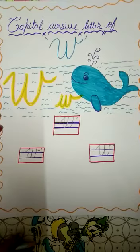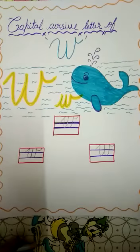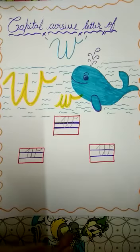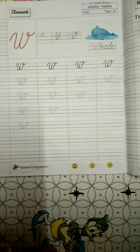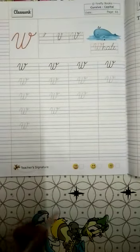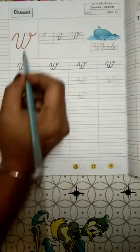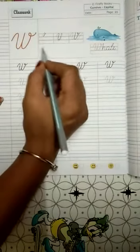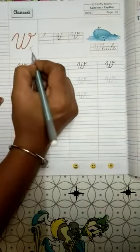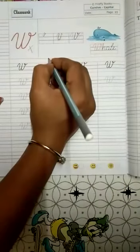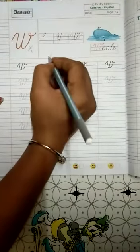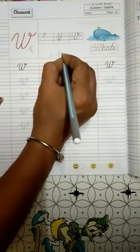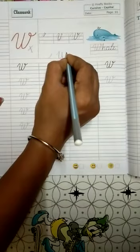Okay kids. So, now we will see that how to write W in our MySkill book. Okay. See kids. Here they are showing you that this loop in W. But we are not going to write our W like this. We will write our W. Okay. How to write W? First do like this. Go up. And go.